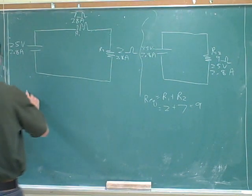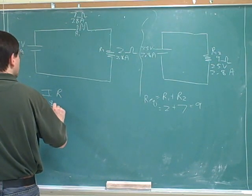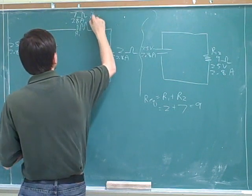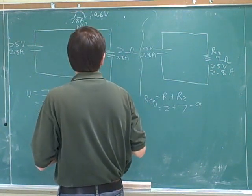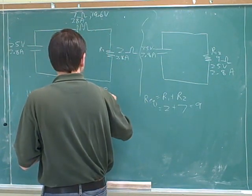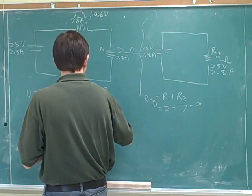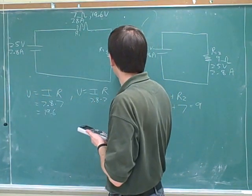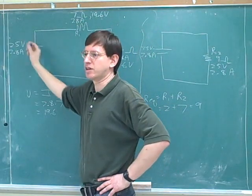So R2 will be 5.6 volts. And R1 will be 19.6 volts. What did you get for this? 5.6. Good. And now we're done, because we've got three numbers for each resistor and two numbers for the battery.